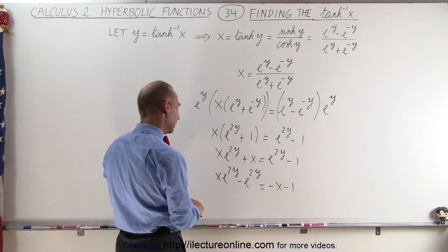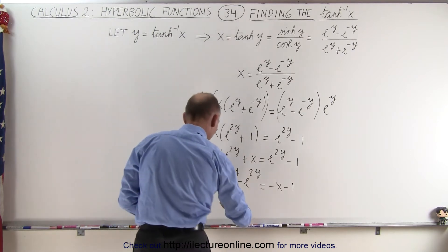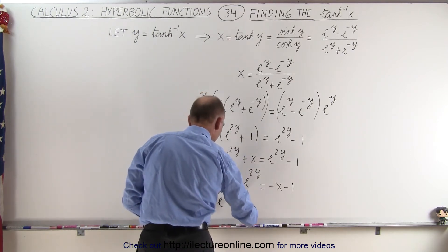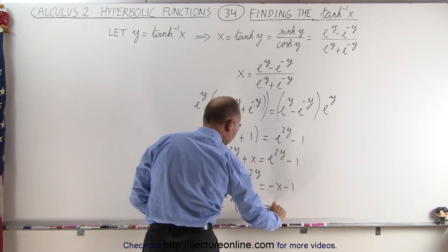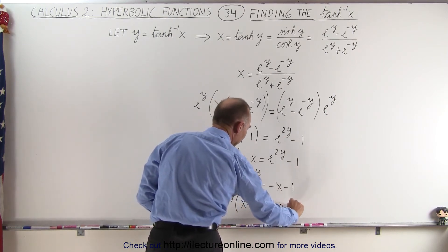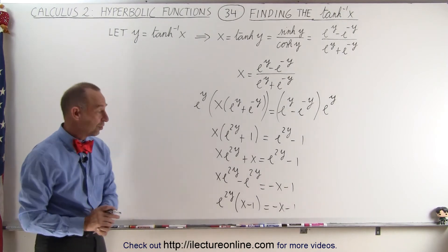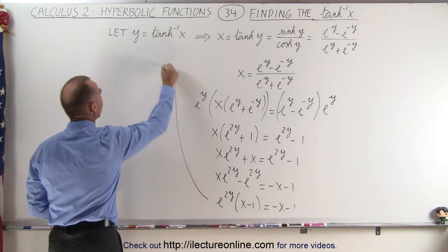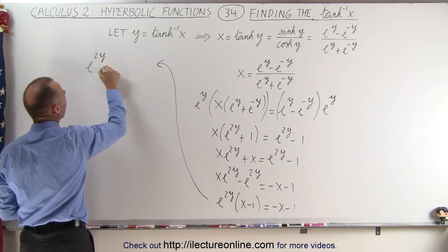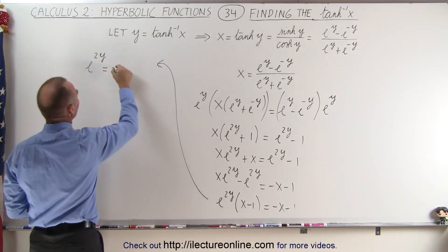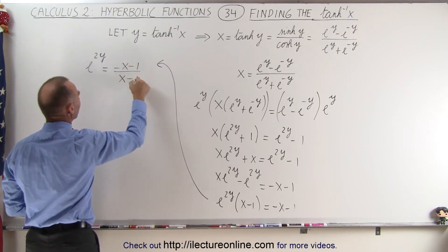At this point we can factor out e to the 2y, giving us e to the 2y times the quantity x minus 1, equal to minus x minus 1. Then we move the x minus 1 to the other side, and we end up with e to the 2y equal to minus x minus 1, divided by x minus 1.